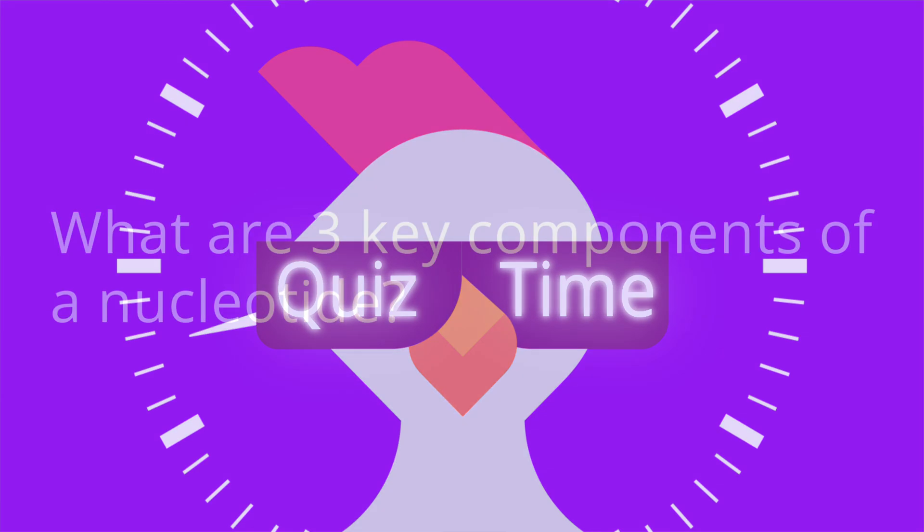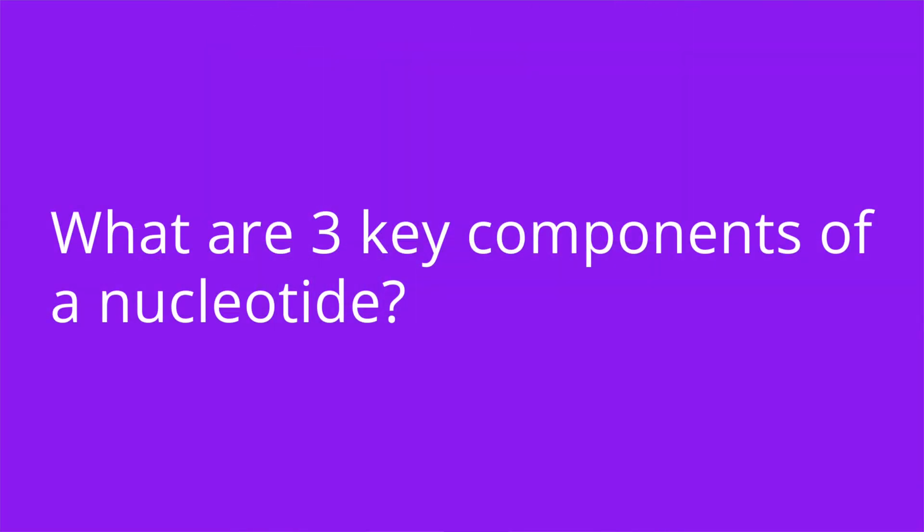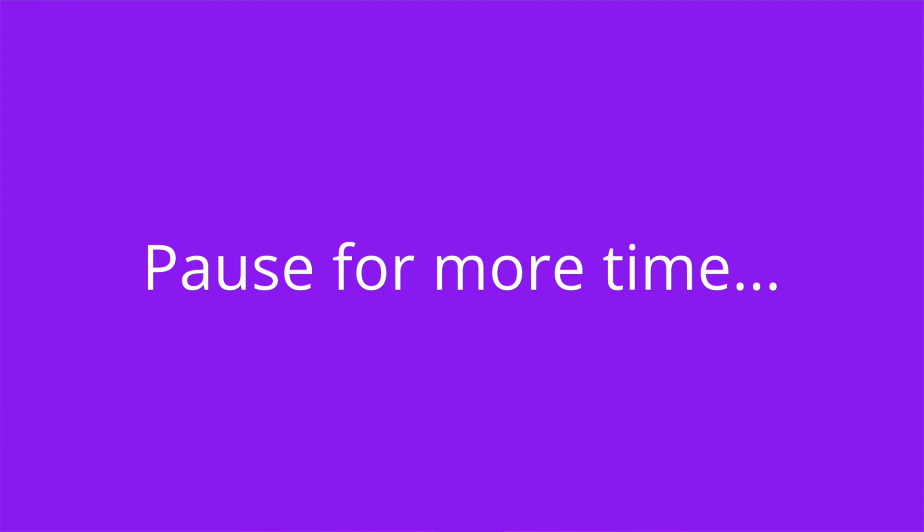Question number one. What are the three key components of a nucleotide? The answer is a 5-carbon sugar, a phosphate group, and a nitrogenous base.